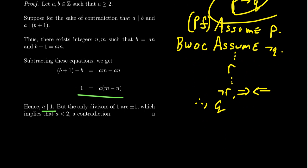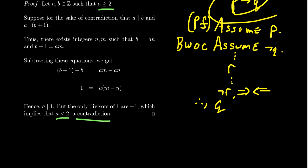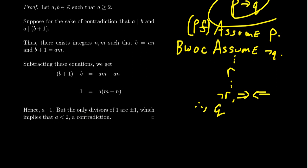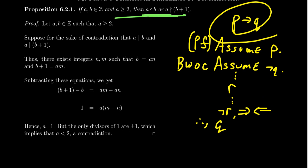The only divisors of 1 are ±1, but by assumption A ≥ 2. If A divides 1 then A equals ±1, meaning A < 2 — a contradiction, since A cannot be both less than 2 and greater than or equal to 2. Once you arrive at a contradiction, you can end the proof right there.